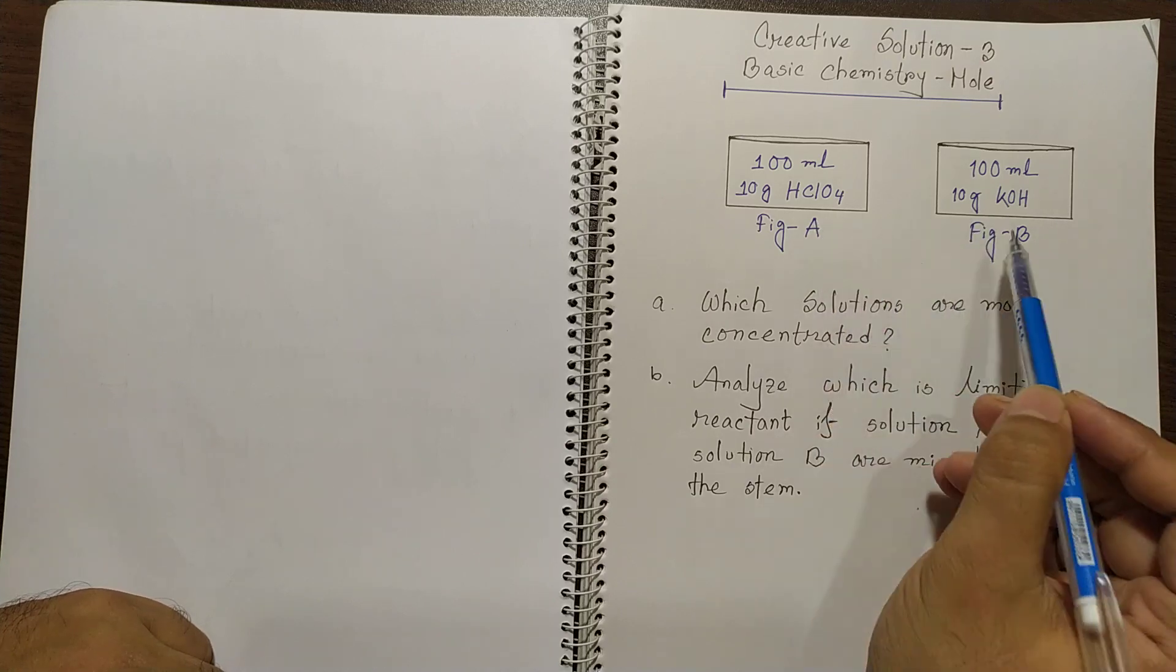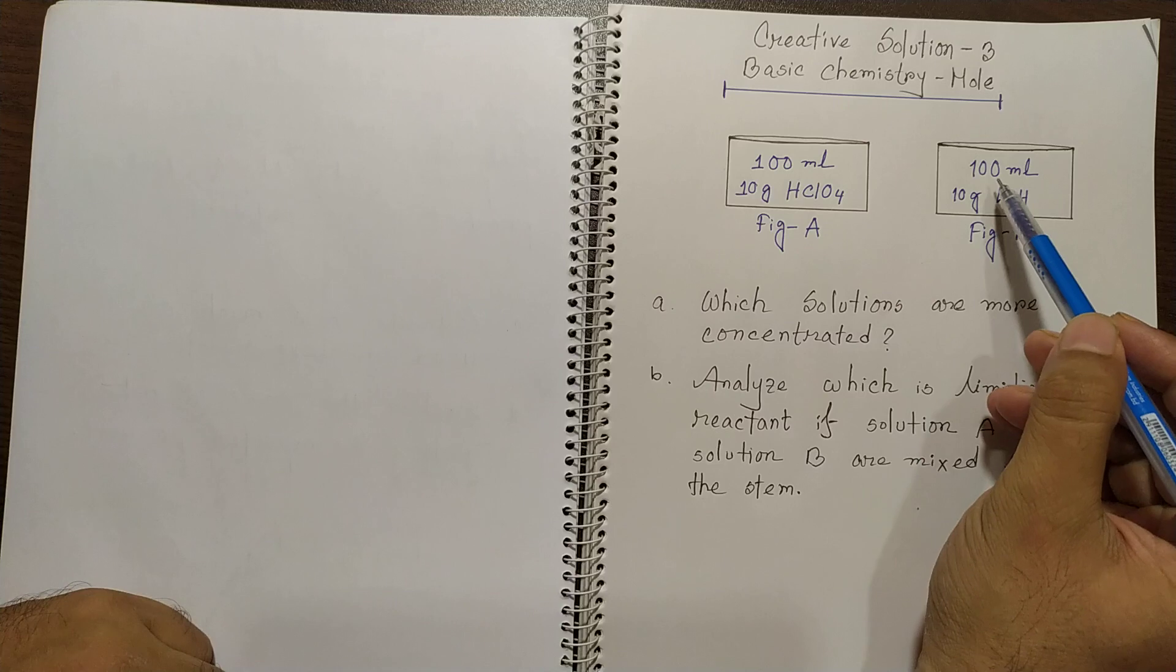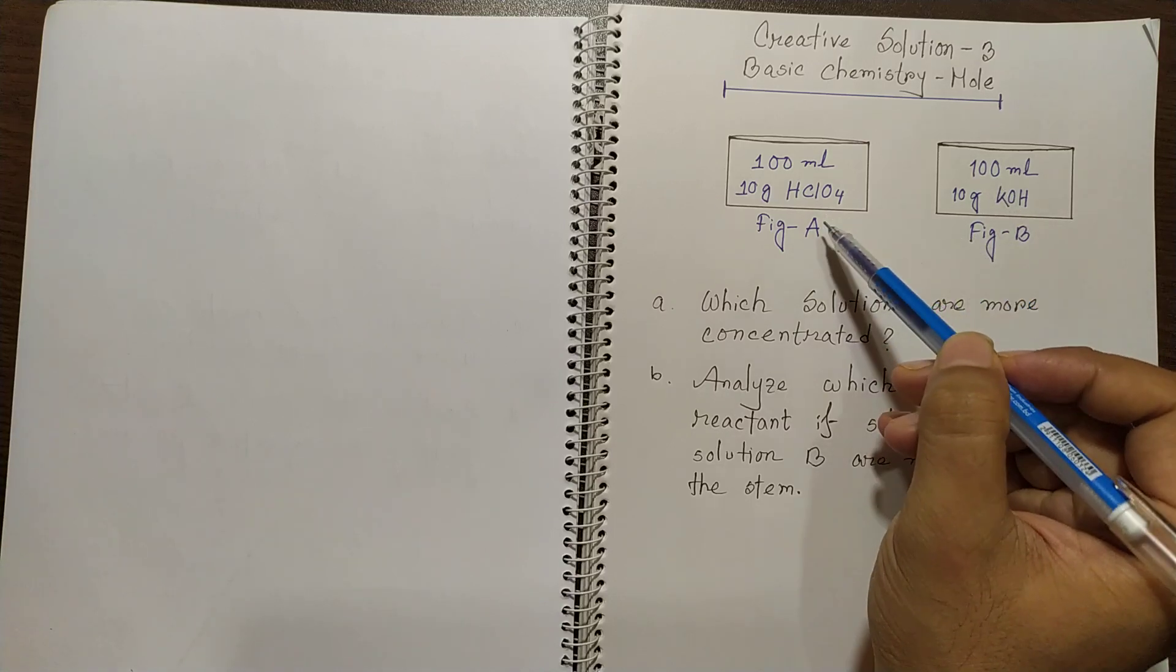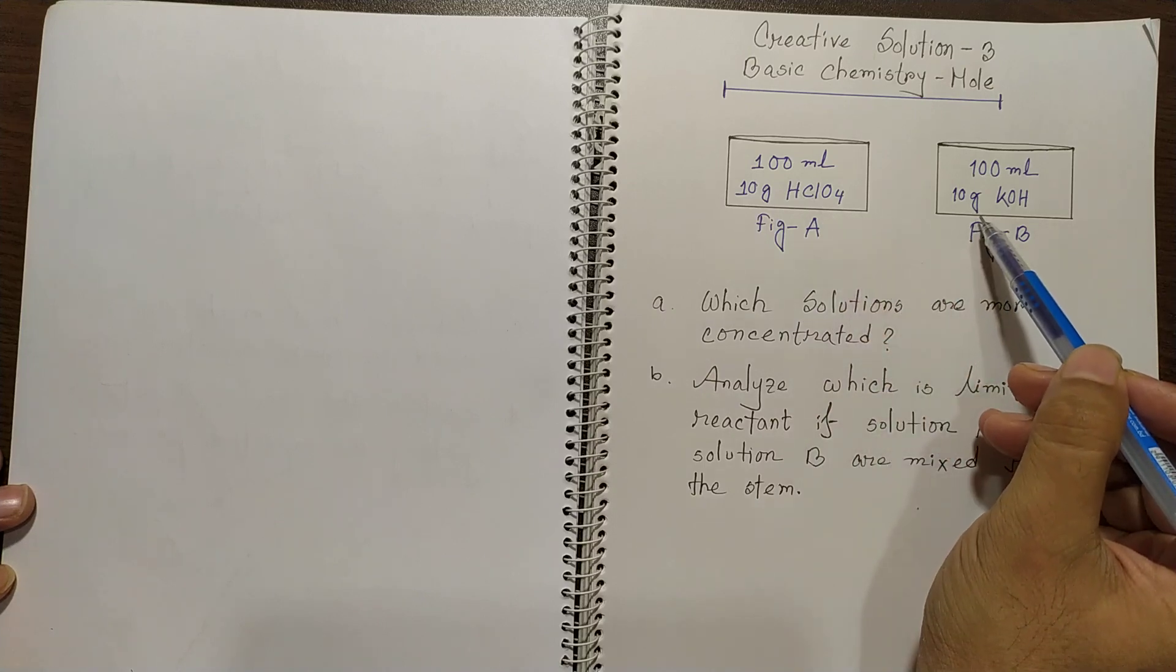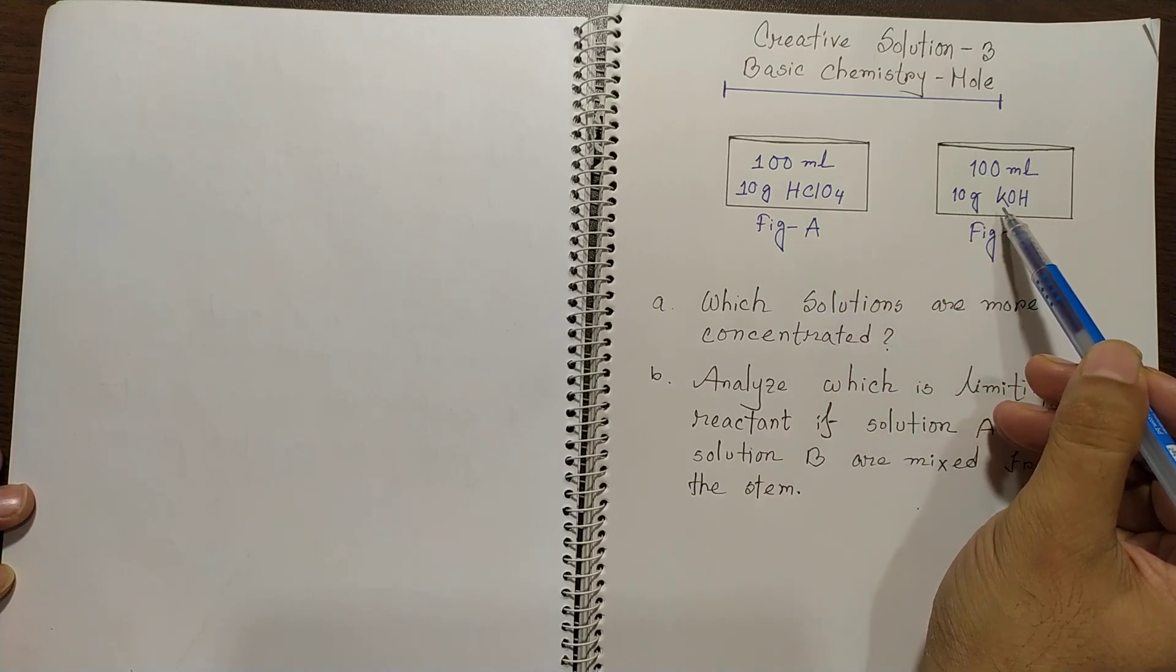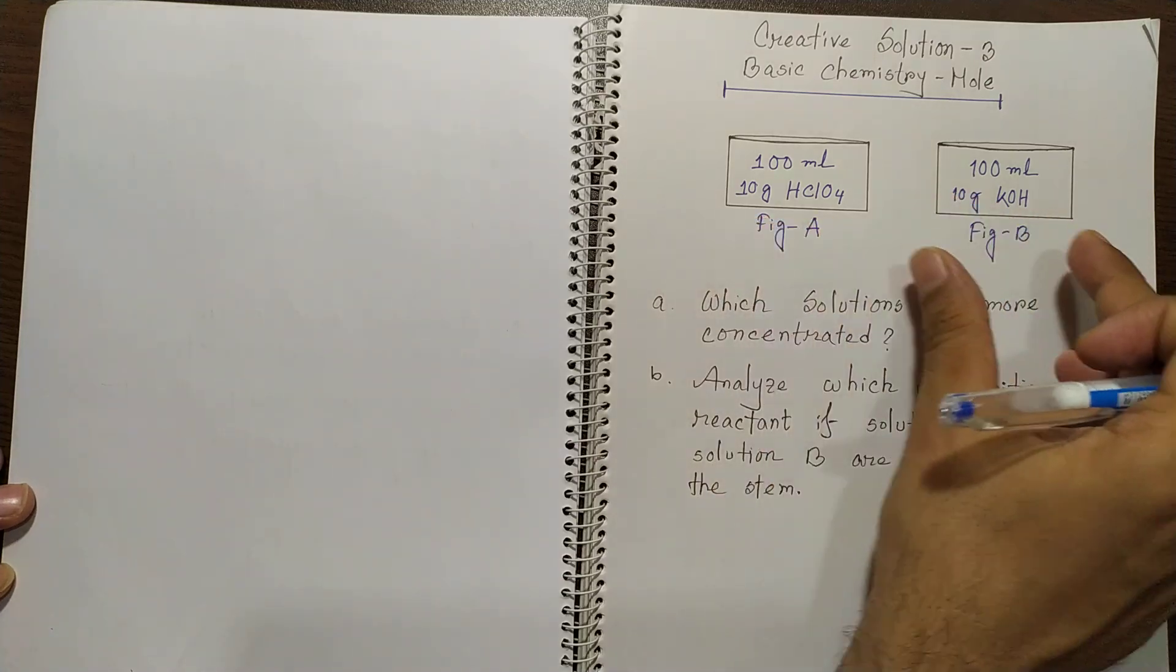So you see that in two jars there are 100 ml perchloric acid and 100 ml potassium hydroxide. In figure A there are 10 gram perchloric acid and in figure B there are 10 gram potassium hydroxide. So two different jars are there.